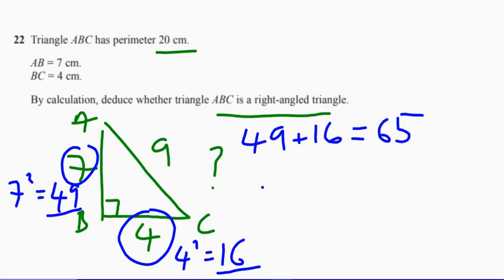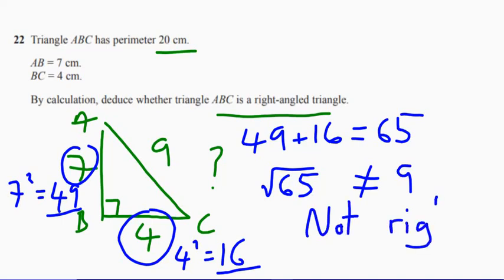So is the square root of 65 equal to 9? It's not 9. If it were 9, then it would be a right-angled triangle. So therefore, it is not a right-angle because the square root of 65 is not 9.